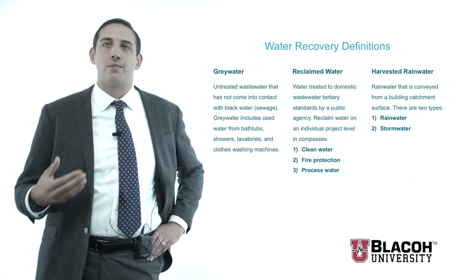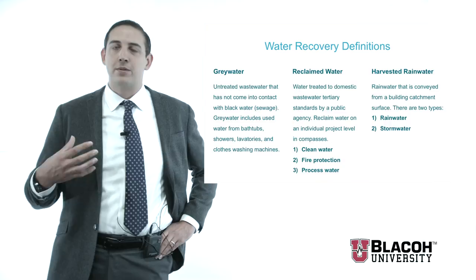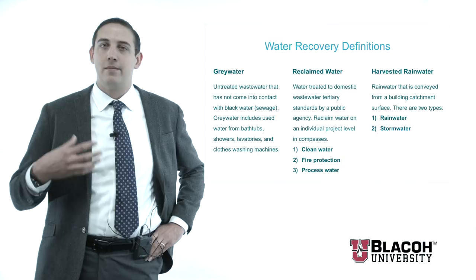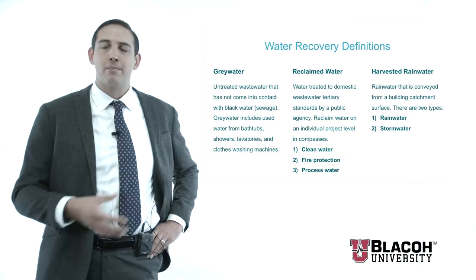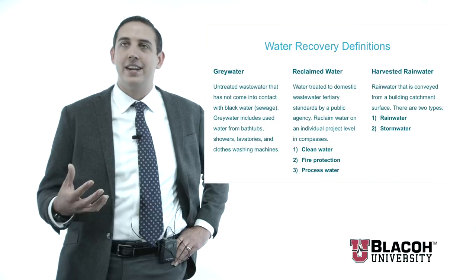Harvested rainwater is broken down into two distinct classifications. Rainwater is any water captured solely from a roof surface, and then stormwater is any precipitation captured from any other source — parking lots, streets, pedestrian walkways, fields, agriculture, or even captured in a pond or a natural fountain.